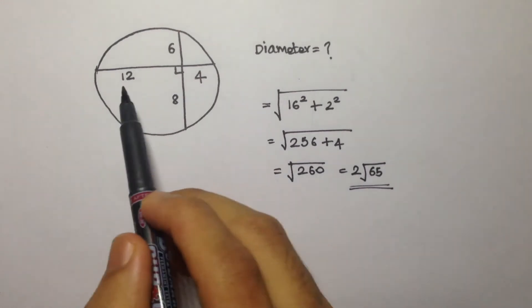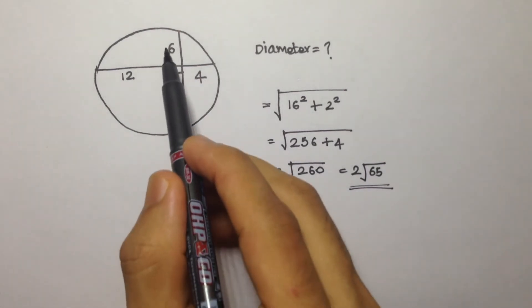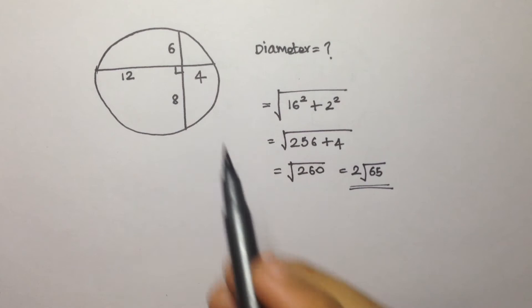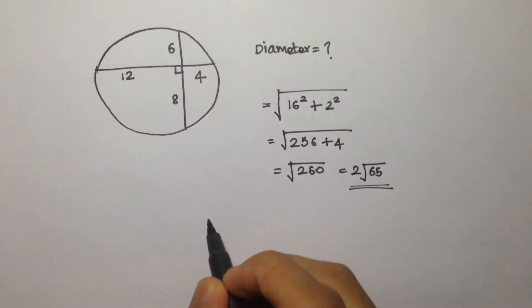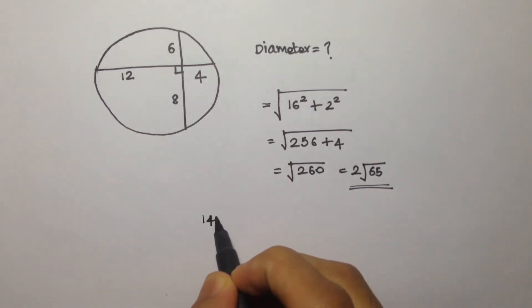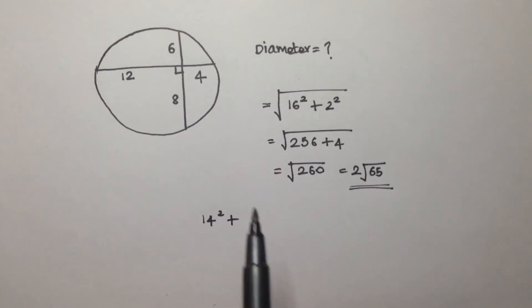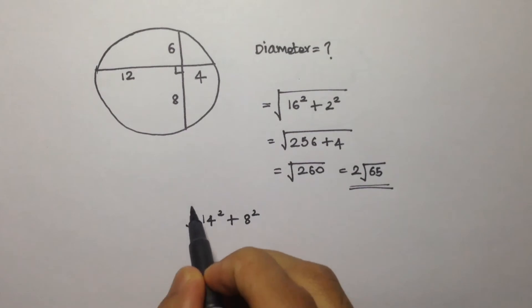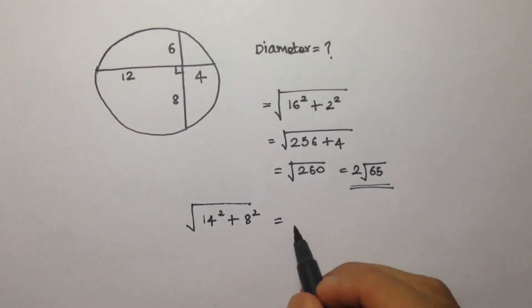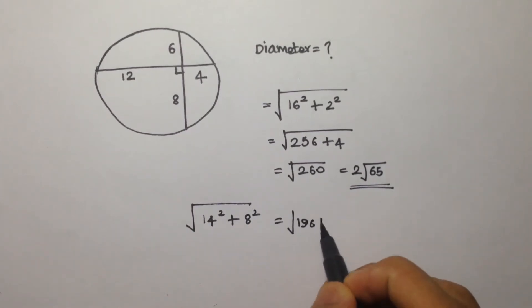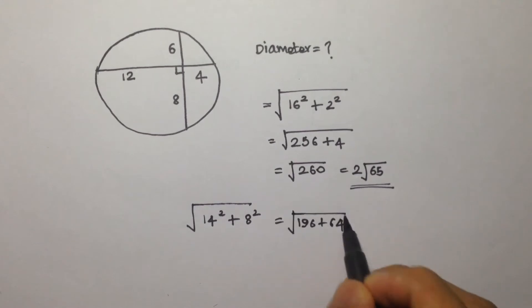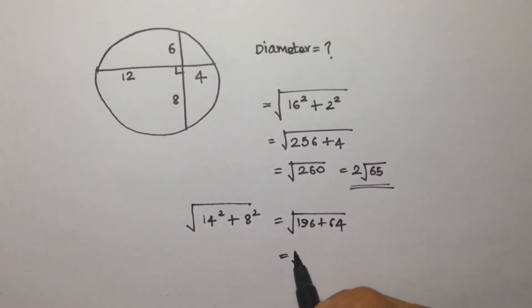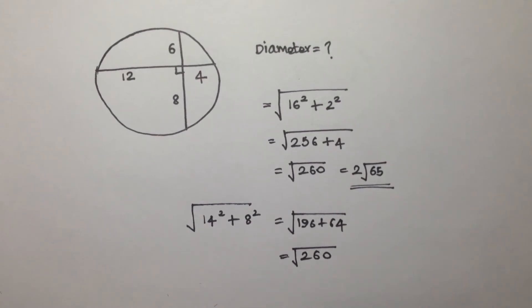There is nothing special about which pair we choose. We can also take 6 plus 8, which is 14, and the difference of the other pair: 12 minus 4 is 8. Then 14 squared plus 8 squared gives 196 plus 64, and we again get root of 260 — the same answer.